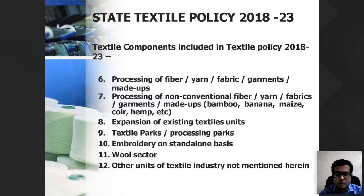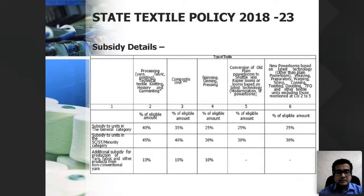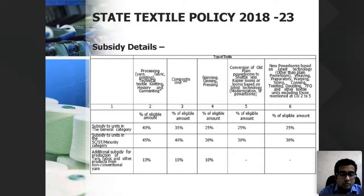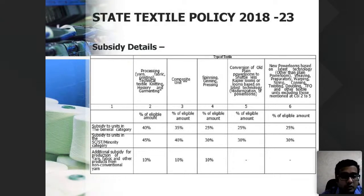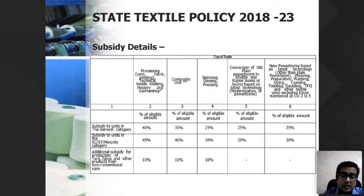Under the state TUFS scheme, the subsidy rates are much higher than ATUFS's 15%. For processing units, technical textile units, or knitting units, you get 40% of the eligible machine cost. For spinning units it is 25%. This is a huge amount — if you install a machine worth 1 crore, you can get 15% from ATUFS and 40% from state TUFS, totaling 55%.